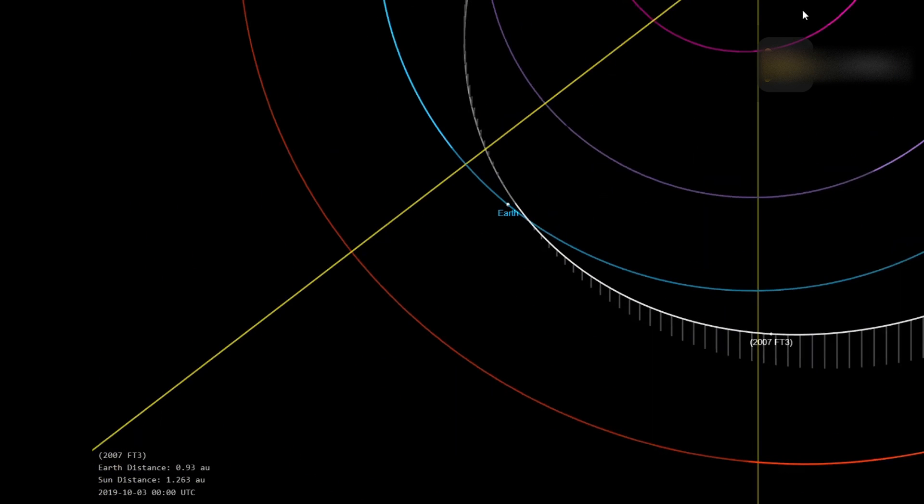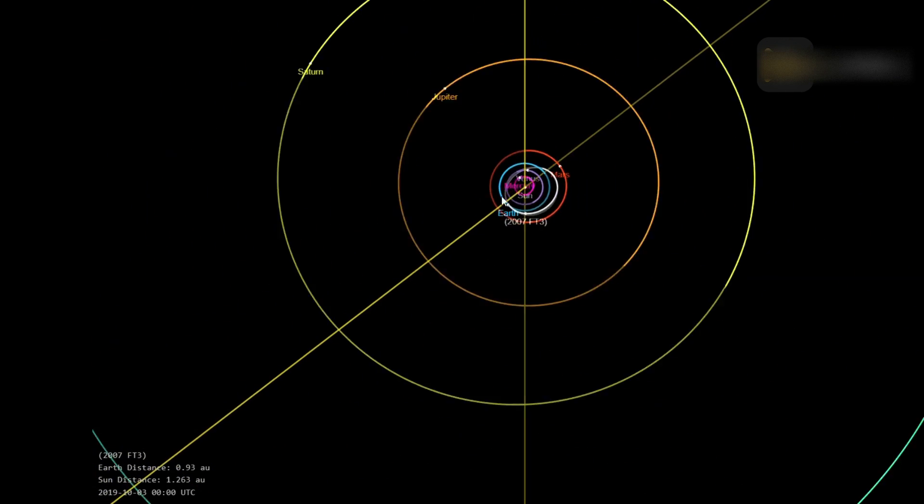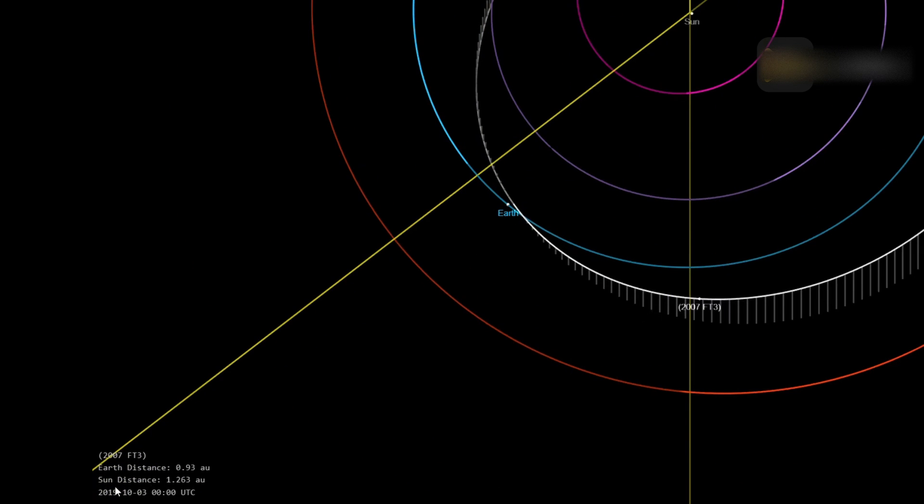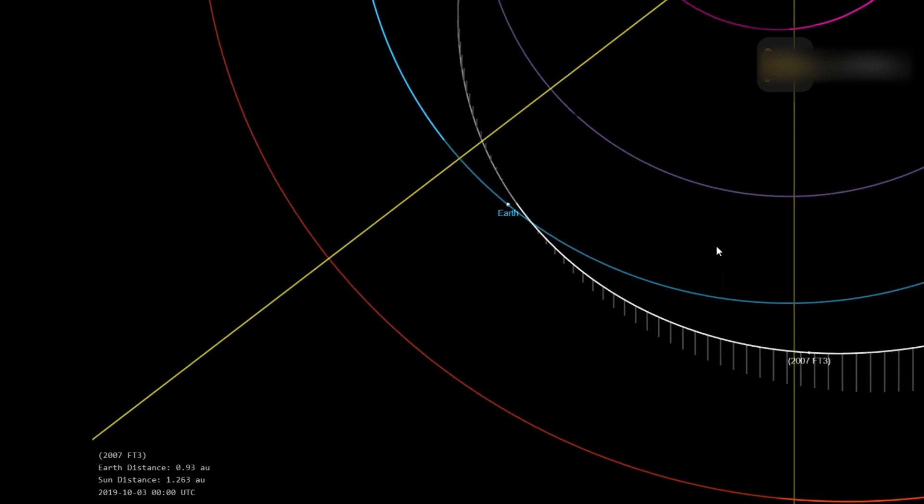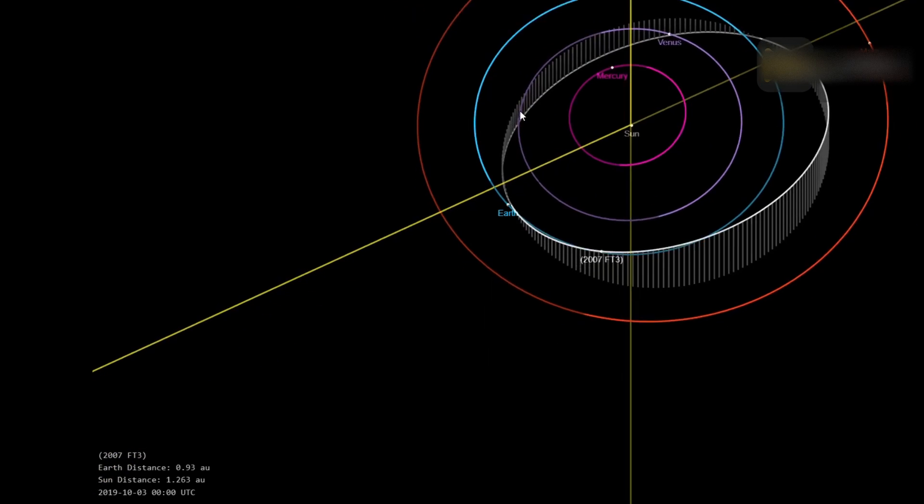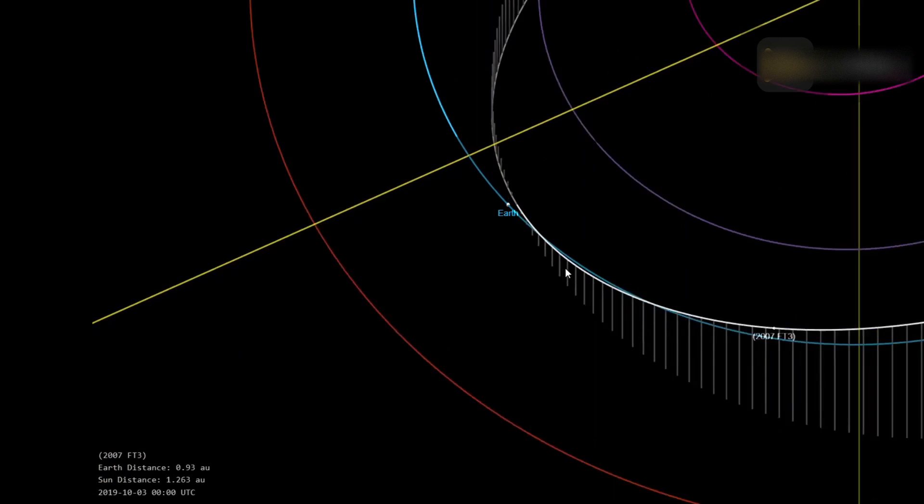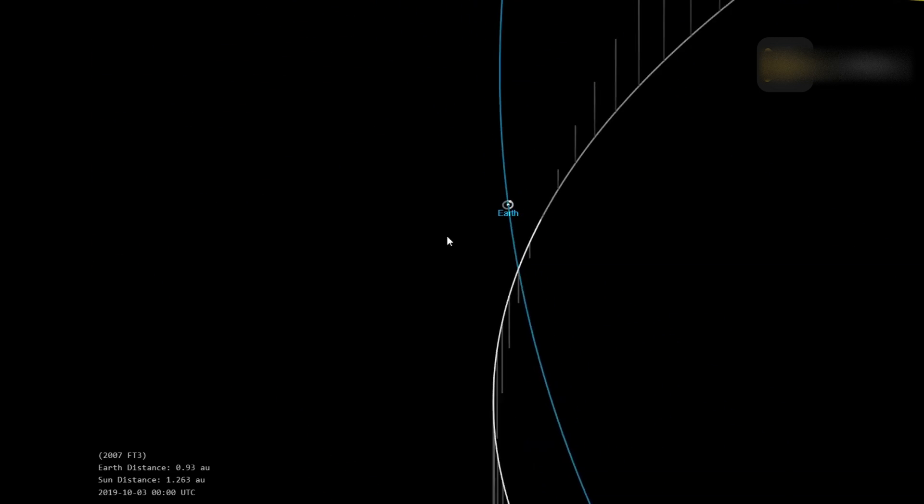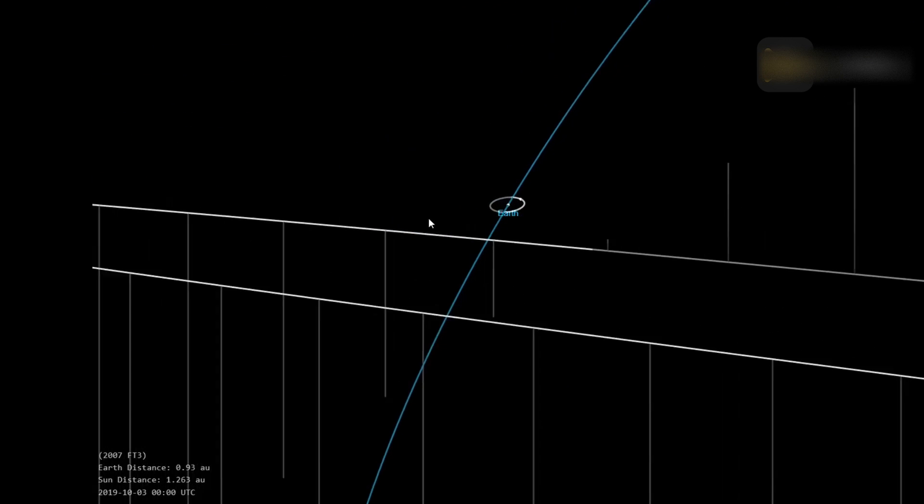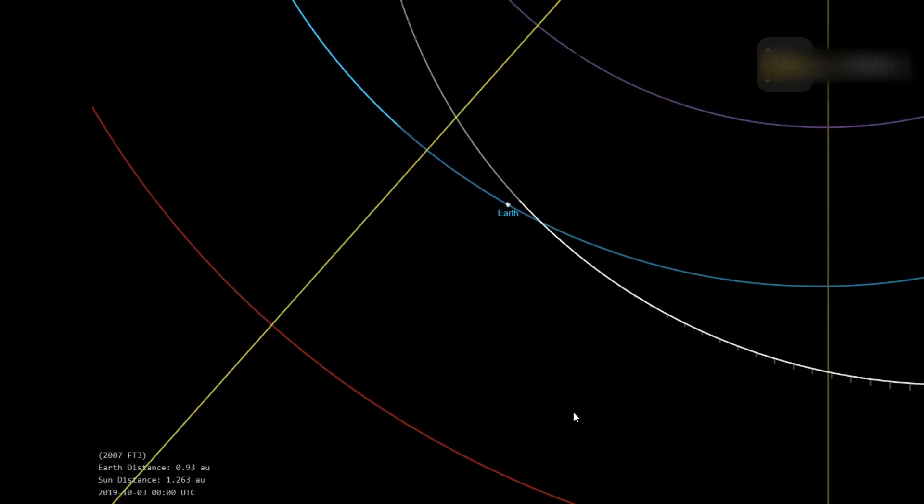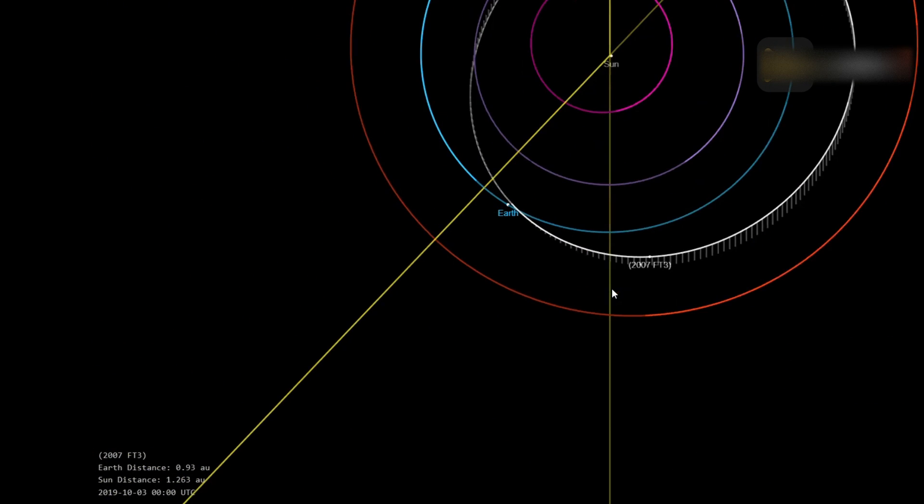Because of the uncertainties, however, 2007 FT3 does appear in a risk list maintained by astronomers at the Center for Near-Earth Object Studies at NASA's Jet Propulsion Laboratory in Pasadena, California. The Sentry Risk Table is part of a highly automated collision monitoring system that continually scans the most current asteroid catalog for possibilities of future impact with Earth over the next 100 years. Asteroid 2007 FT3 does appear on the current Sentry Risk Table.